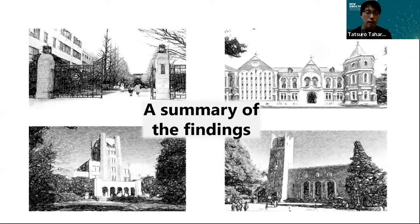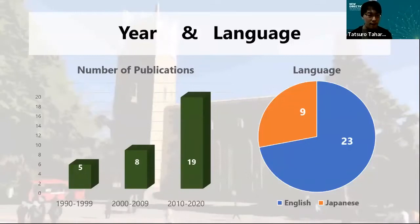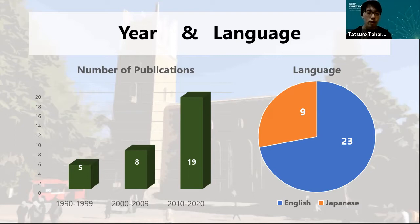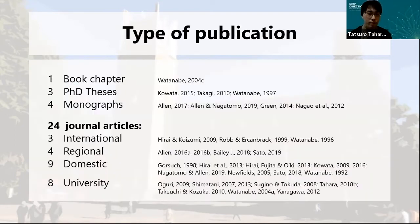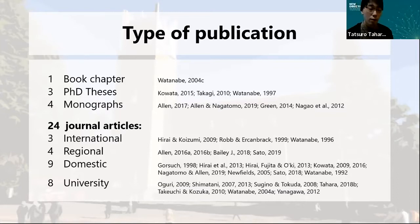Here is a summary of the findings, based on our research paper by Allen and Tahara. Regarding the year, washback research shows considerable growth in Japan from the 1990s to the 2010s. Interestingly, no studies are written in English, which highlights the inward-looking nature of washback researchers. Regarding the type of publication, research was identified in the format of one book chapter, three PhD theses, four monographs by testing agencies, and 24 journal articles — including three international, four regional, nine local Japanese journal articles, and eight Japanese university bulletins.